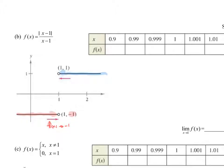As I approach from the right, the y value seems to be approaching 1. So notice from the left it's negative 1 and from the right it's positive 1. One of the key definitions of a limit is that it has to be a single value that it approaches, and here we have it approaching two separate values.